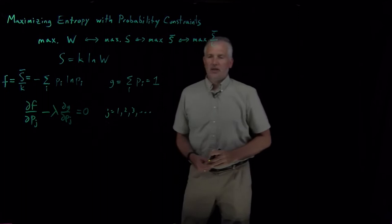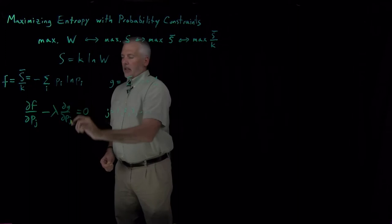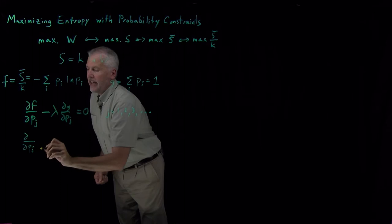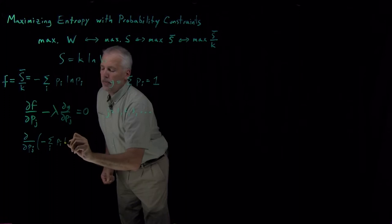So we just need to take these derivatives. I'll write this out, derivative with respect to P sub j of negative the sum of all the P log P's, so Pi log Pi summed up over all the i's, that's that first dF/dPj.